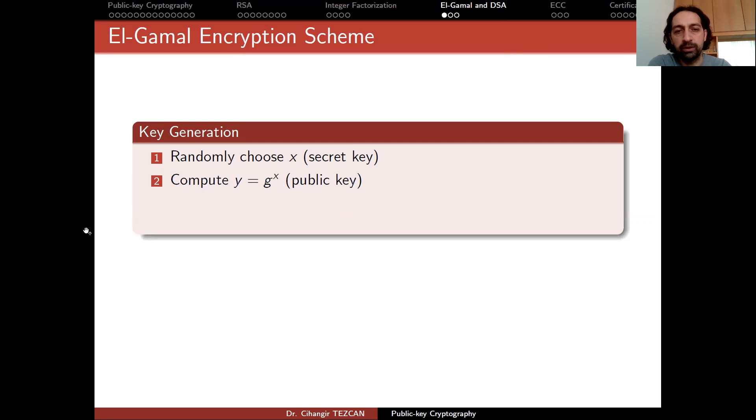If you focus on ZP or FP, the field that is generated by a prime number, which only includes the numbers starting from 1 to P minus 1, then in that case, this would be Y equals to G to the power X modulo P. But of course, this is not the only group that you can use.